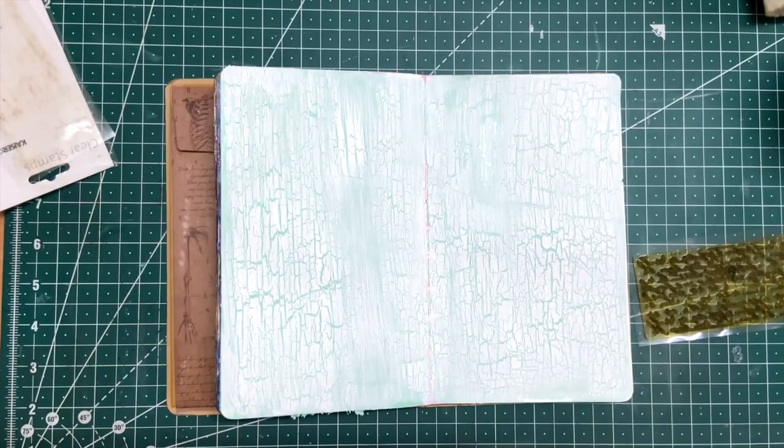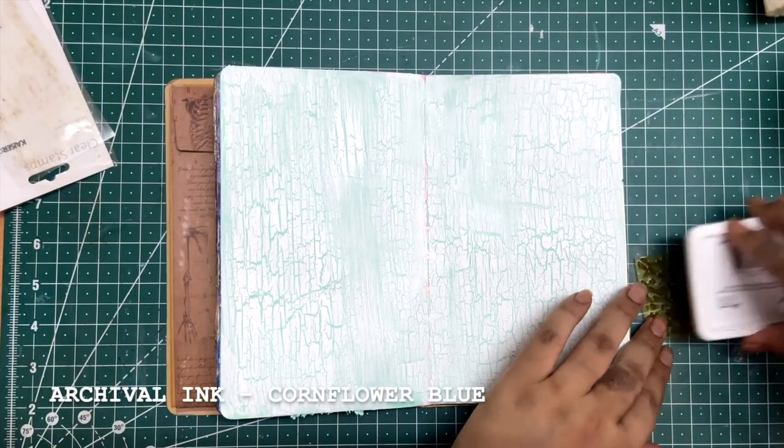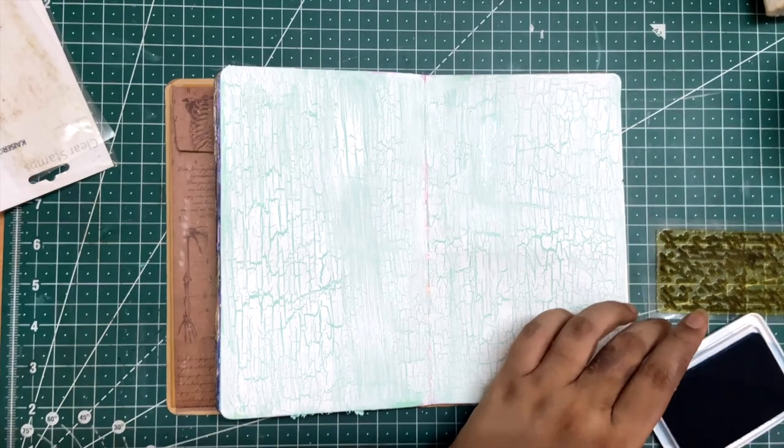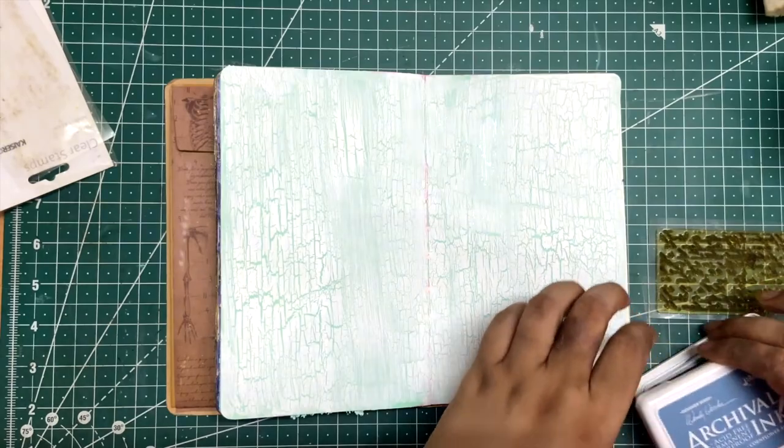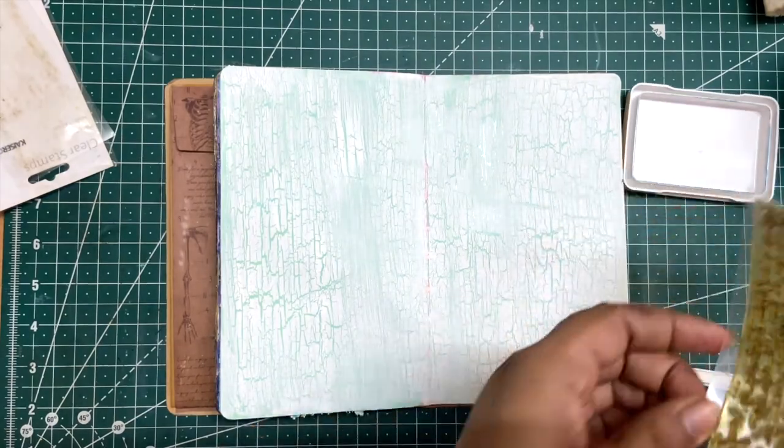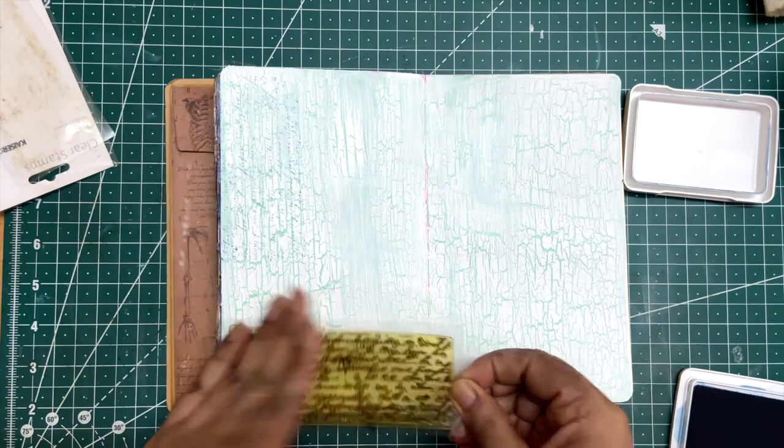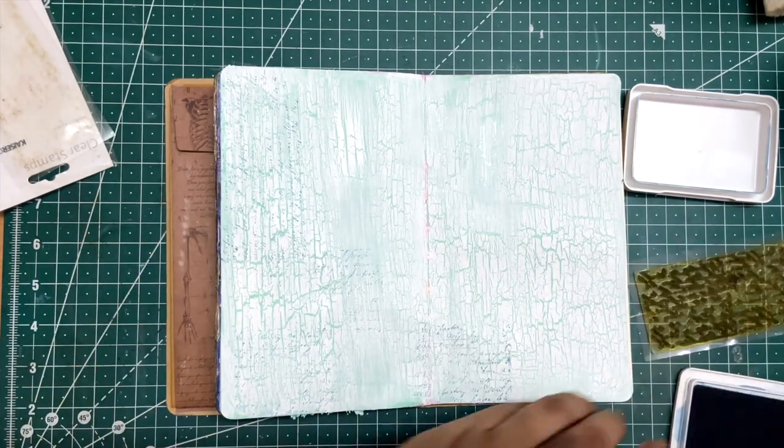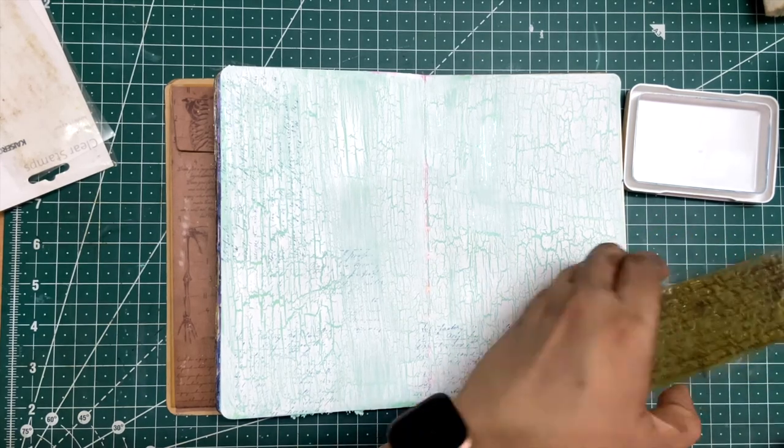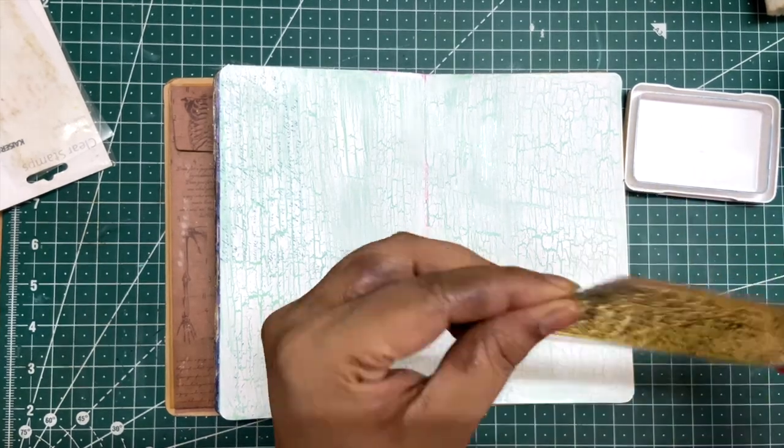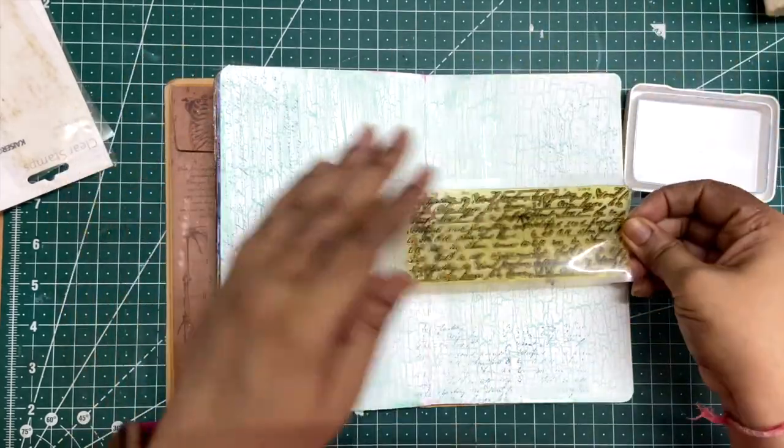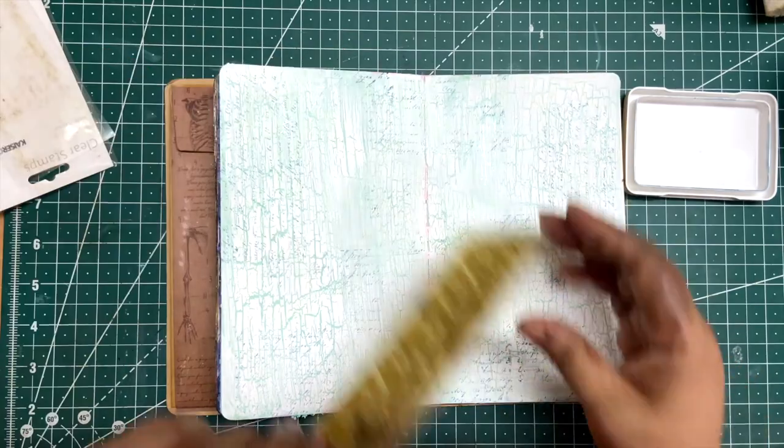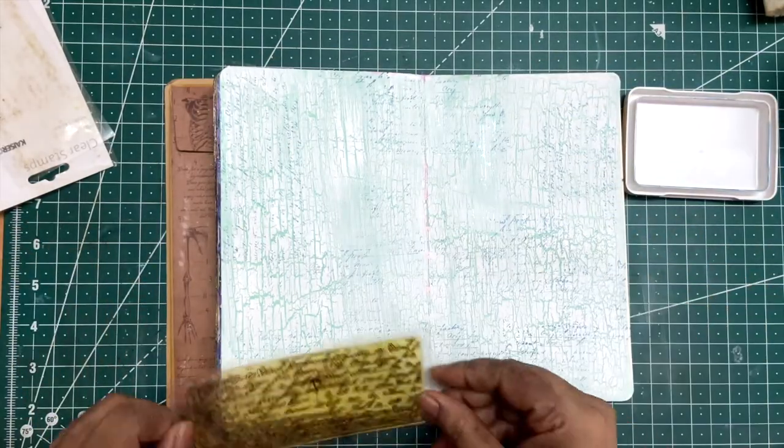Just to add some texture to the page I am going to use one of my favorite script stamps and this cornflower blue archival ink. It's not too visible but that's what I wanted. I don't want it to become the focus on the page. I want it to be part of the background.